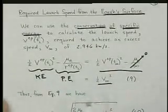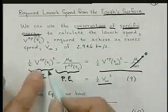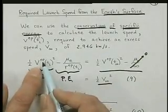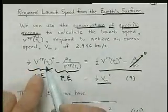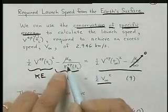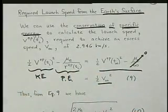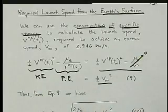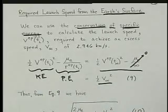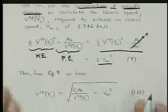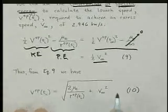So we rearrange this equation to solve for the velocity of the probe with respect to the Earth. So we just put the mu over R on the right side, and that's over here. We multiply by 2 so the 2 shows up, and the half goes away. And we take a square- I'm sorry, let me slide this up. Let's do that again.